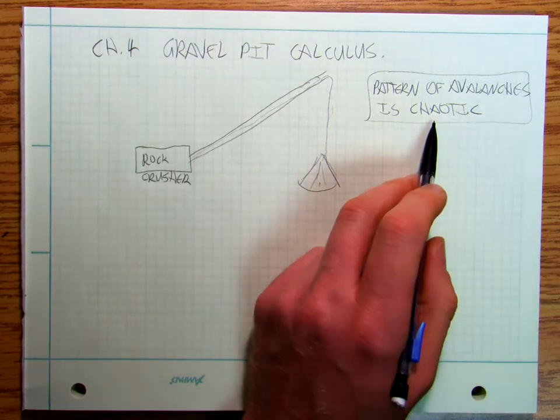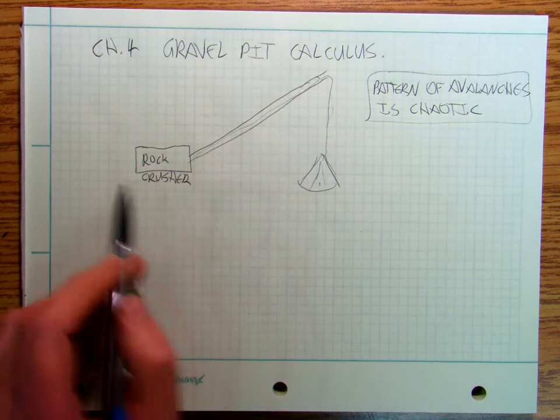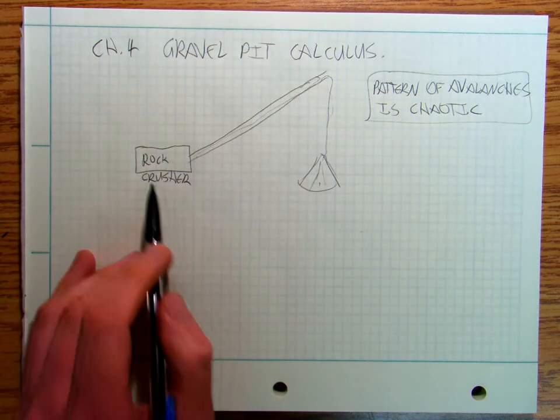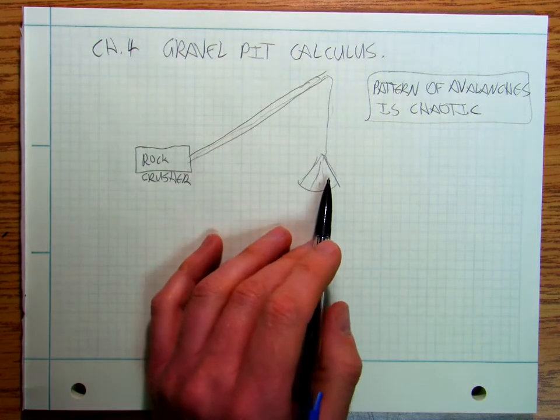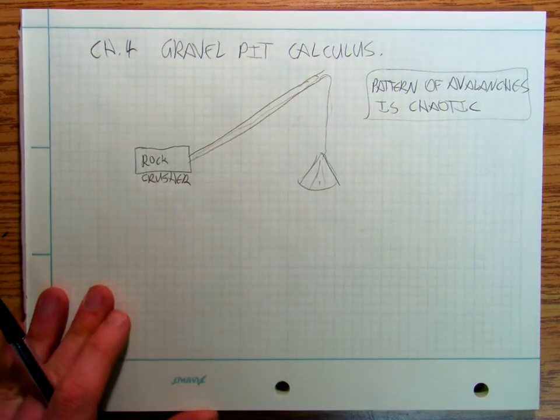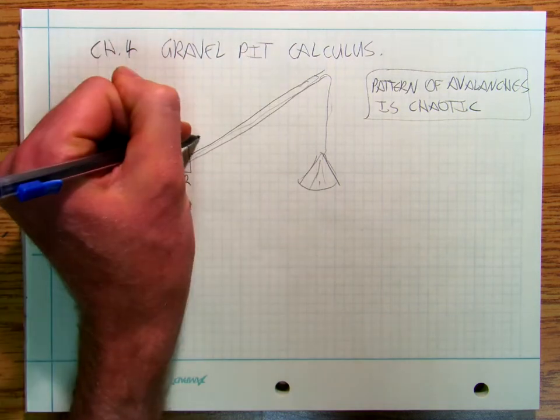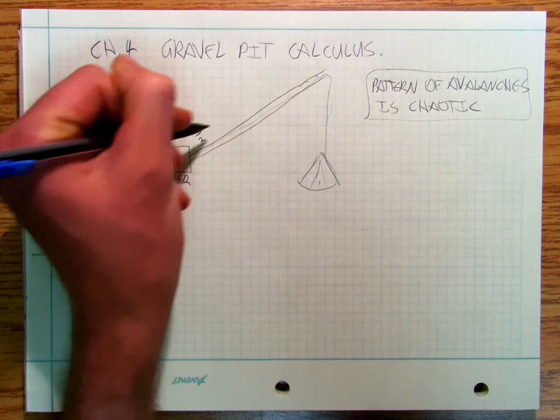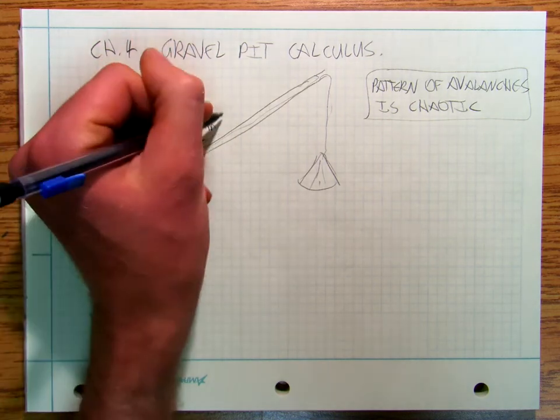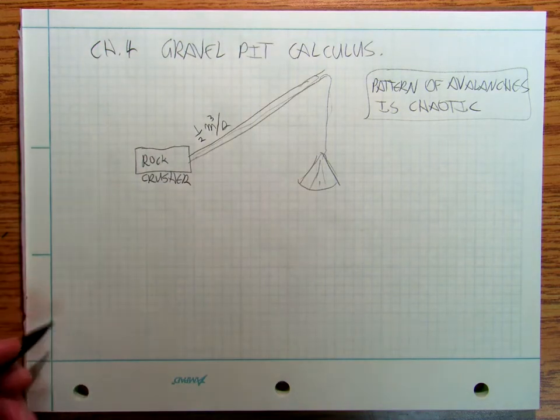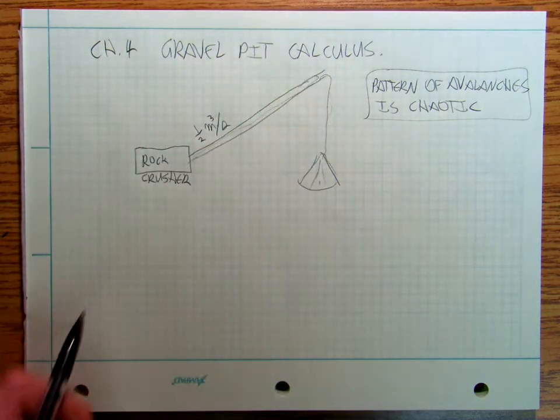So this is just going to be a little intro into rock crushing calculus. Suppose your rock crusher is sending one half of a cubic meter of rock per second.